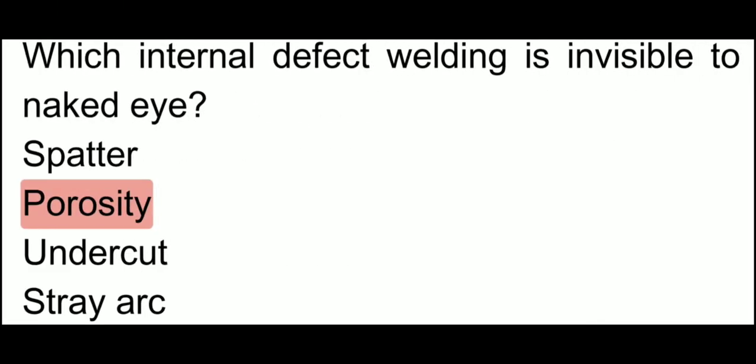Which internal welding defect is invisible to the naked eye? We can see spatter, we can see undercut, we can see stray arc, but porosity is internal and we cannot see it with the naked eye.